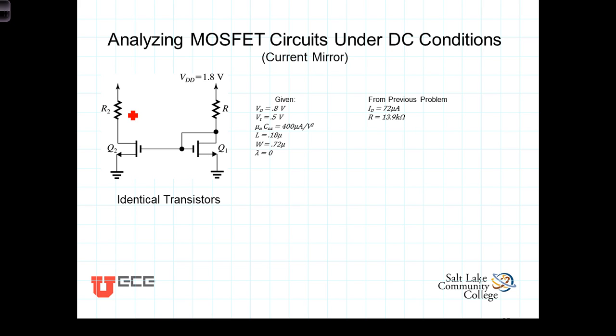In this circuit, we're asked to determine the value of R2 that will cause Q2, this transistor here, to be biased right at the edge of the saturation region.